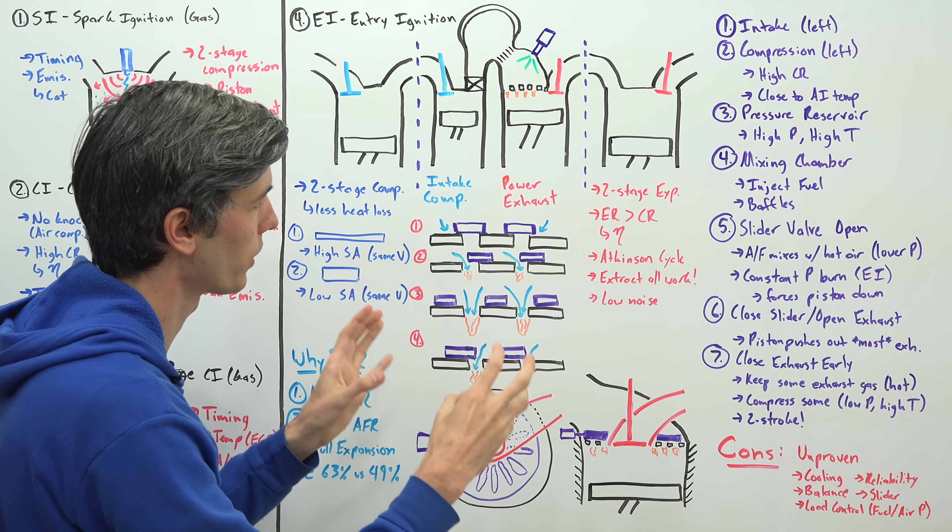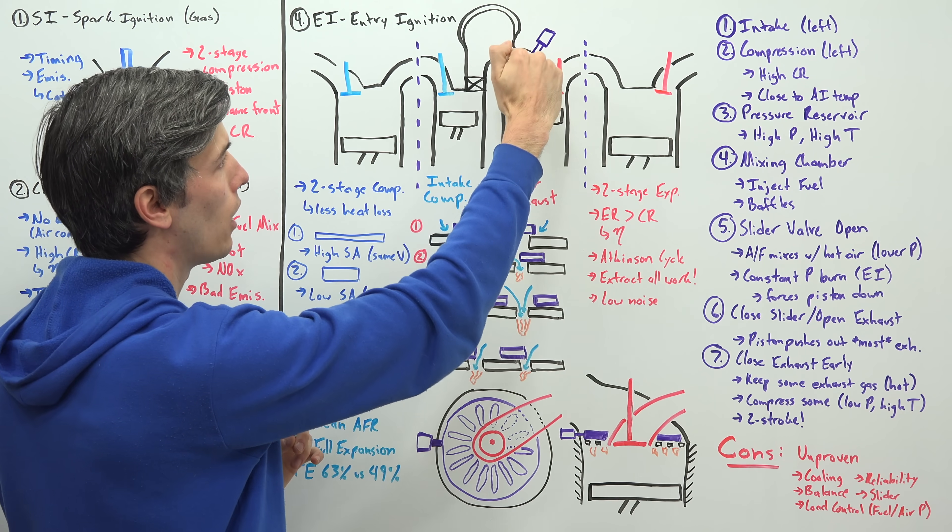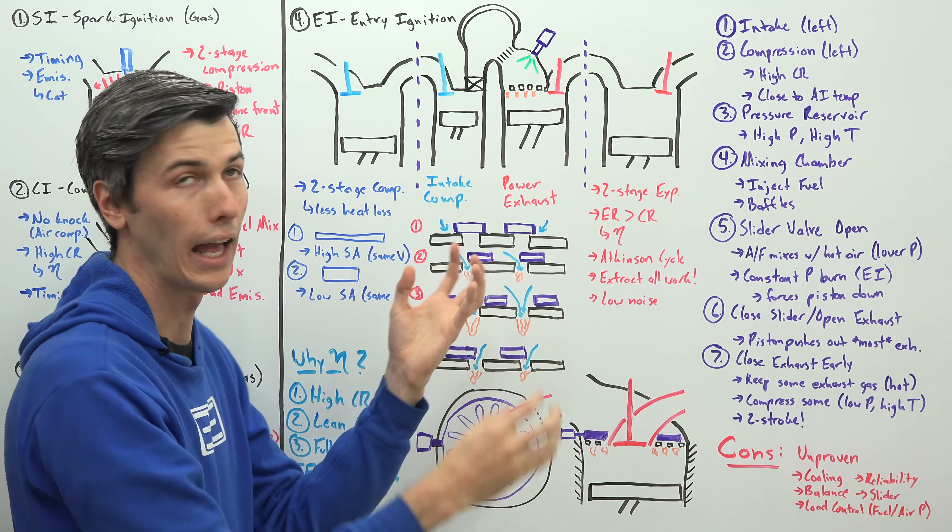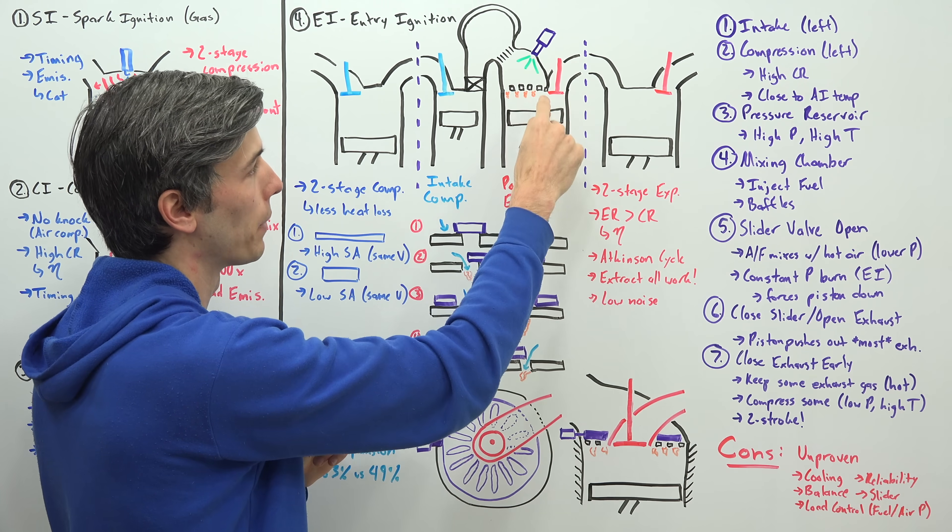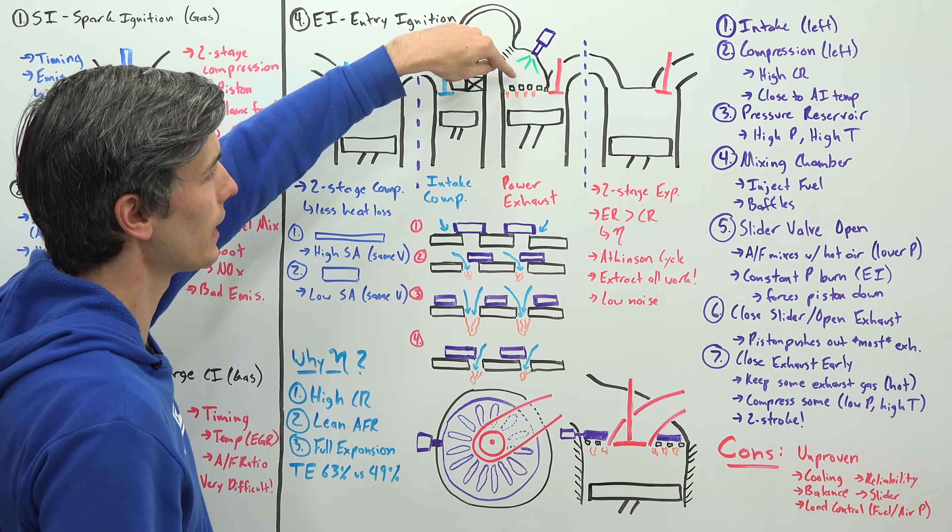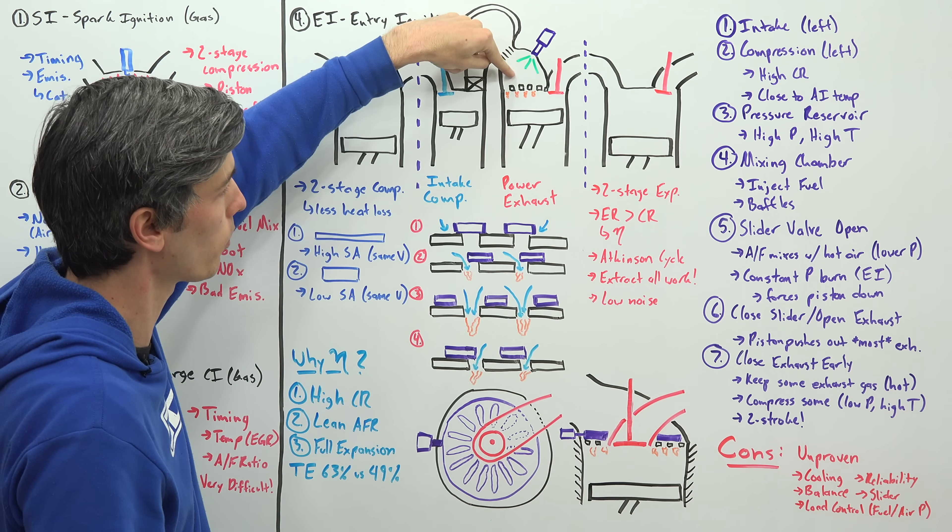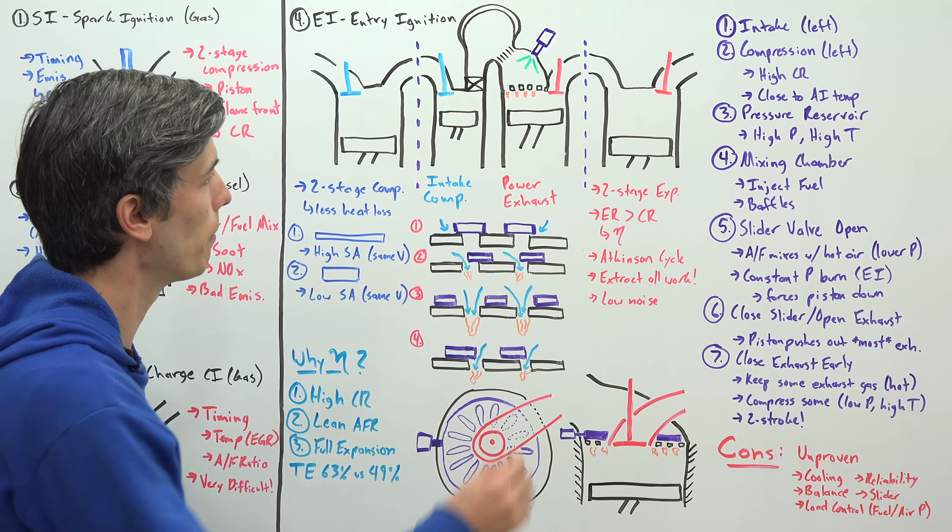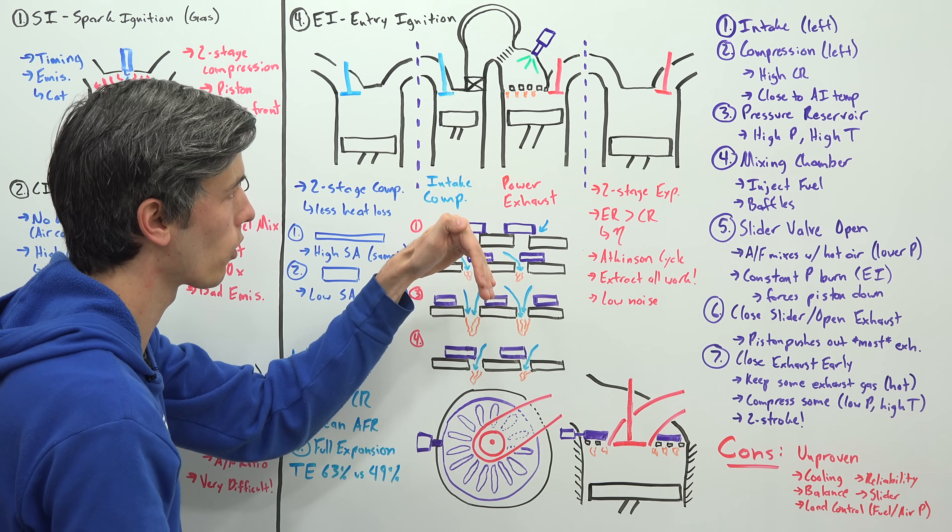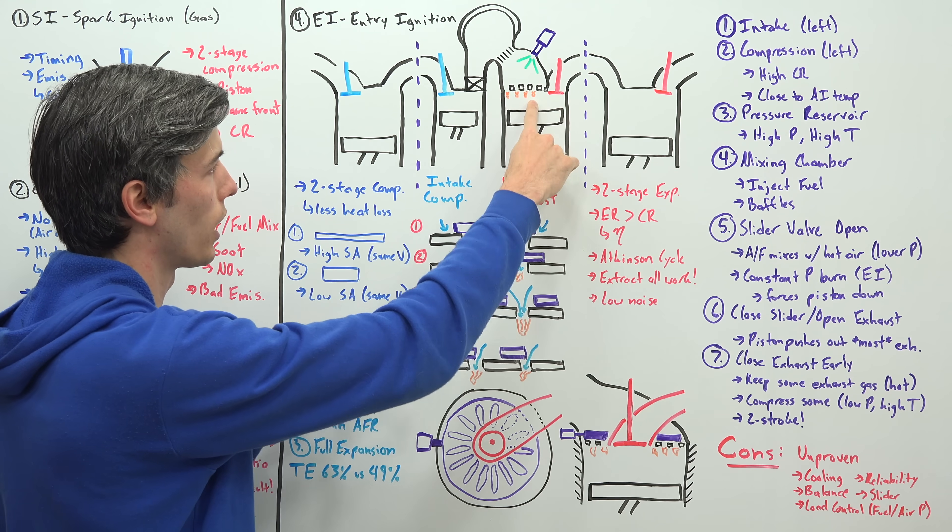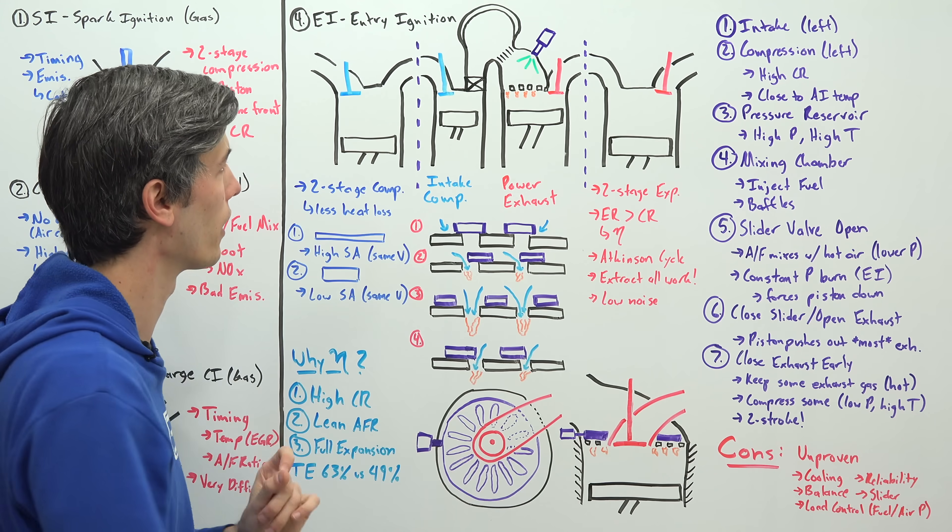And here's the big change with entry ignition. So you have a slider valve that opens up to allow that air fuel mixture into the cylinder and within this cylinder it's very hot. It's a lower pressure than above, but it's very hot. So immediately as this high pressure, high temperature air is forced into the cylinder below it because it has a higher pressure, then it starts to combust because the temperature in here is very high. So pressure forces it across and then the temperature of this combustion chamber causes it to ignite and it ignites upon entry. Hence the name entry ignition.